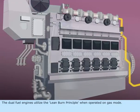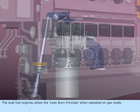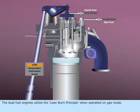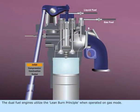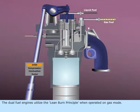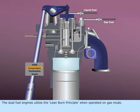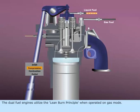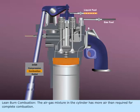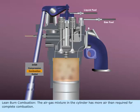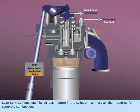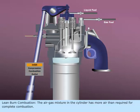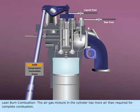The dual-fuel engines utilize the lean burn principle when operated on gas mode. In lean burn combustion, the air-gas mixture in the cylinder has more air than required for complete combustion.